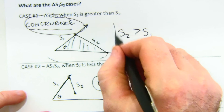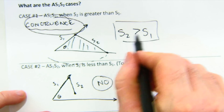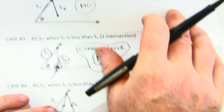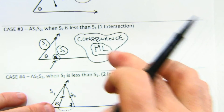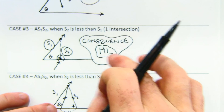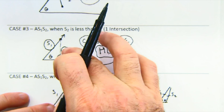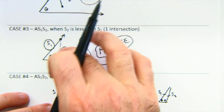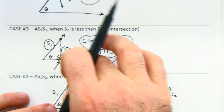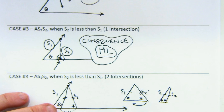To summarize the cases of angle-side-side: when side two is greater than side one, it's congruent. When side two is too short, no triangle forms. When it hits exactly once as the perpendicular distance — HL with a 90-degree angle, hypotenuse, and leg — you also have a congruence. And when it's shorter but not too short, you get the ambiguous case with two possible triangles.